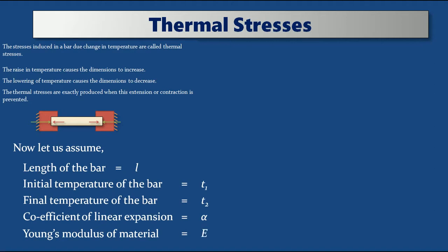Based upon these elements we can write what is the free expansion that takes place for a particular body. Free expansion of the bar — the extension in the bar — is equal to alpha (coefficient of expansion) into temperature change into length of the body. This relation gives the free expansion or extension in the bar when there is an increase in temperature. Similarly, T1 minus T2 gives the compaction — the decrease in dimension of the bar.